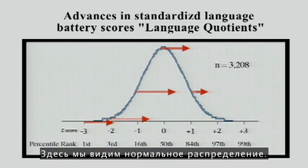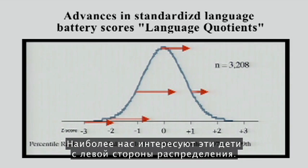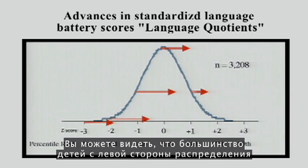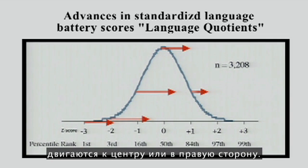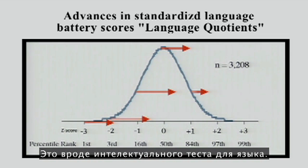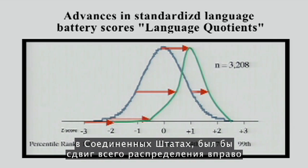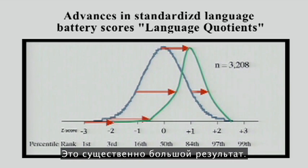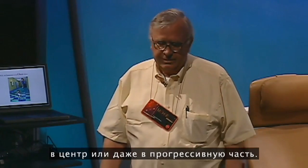Here we're looking at the normal distribution, and what we're most interested in is these kids on the left side of the distribution. This is from about 3,000 children. You can see that most of the children on the left side of the distribution are moving into the middle or the right — in a broad assessment of their language abilities, like an IQ test for language. The impact, if you trained every child in the United States, would be to shift the whole distribution to the right and narrow it. We have the potential to move most children in the slow side of the class to the middle or the right.